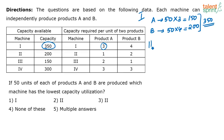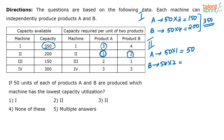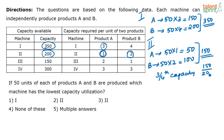For machine two, to produce 50 units of A I need one unit of capacity per product, so 50 × 1 = 50. To produce 50 units of B I need two units, so 50 × 2 = 100. Together I need 150 units. The total capacity is 200, so I have used only 150, which is three-fourths of the capacity of machine two - that is 150/200 = 3/4.